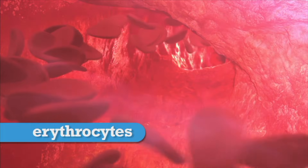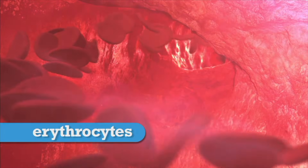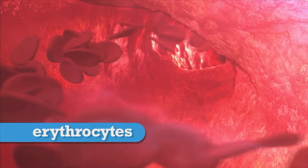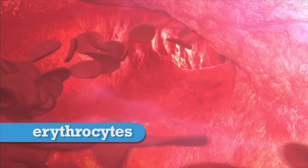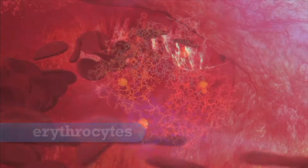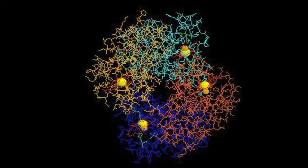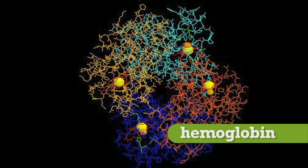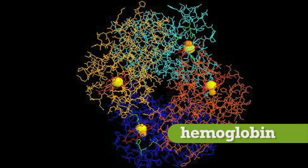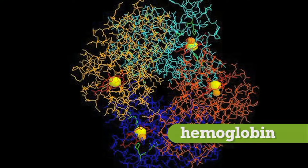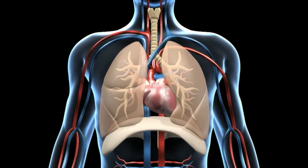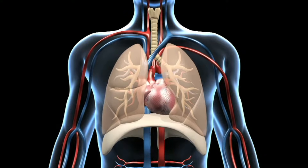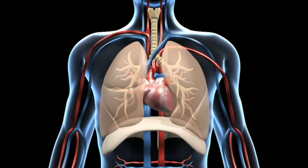Red blood cells are called erythrocytes, and their primary function is carrying oxygen. This is made possible by a protein called hemoglobin. Hemoglobin contains iron, and it is the iron held in a special heme group that gives hemoglobin its oxygen-carrying properties.